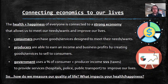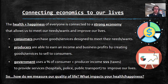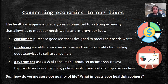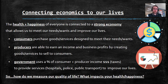Producers are able to earn an income and business profits by creating goods and services to sell to consumers. And if they don't have a strong economy, they can't do that — they will have poor living standards. The government, the other part of our circular flow model, uses a percentage of consumer and producer income taxes to provide services like hospitals, police, and public transport to improve our lives. That's the connection between economics and our health and happiness.